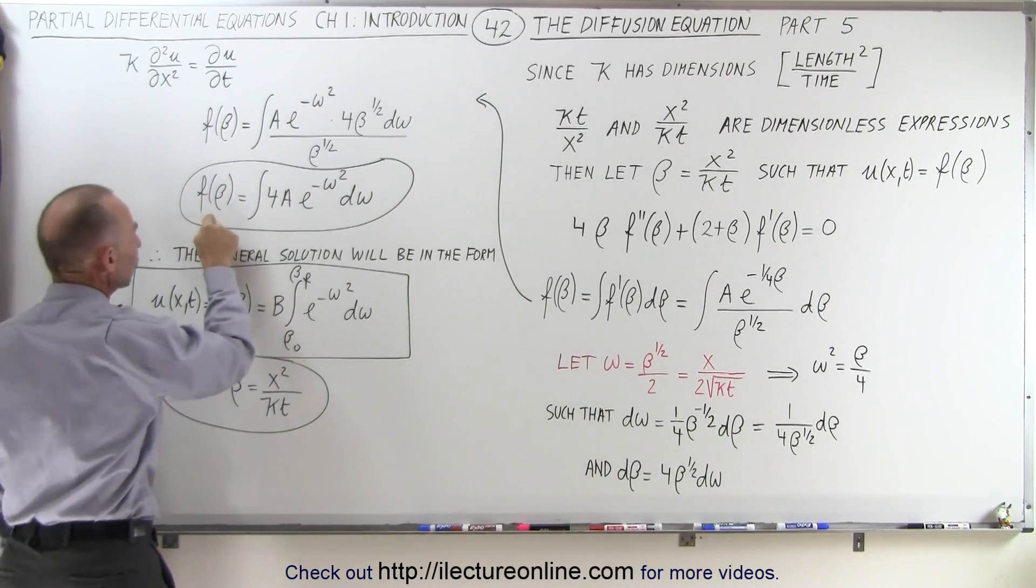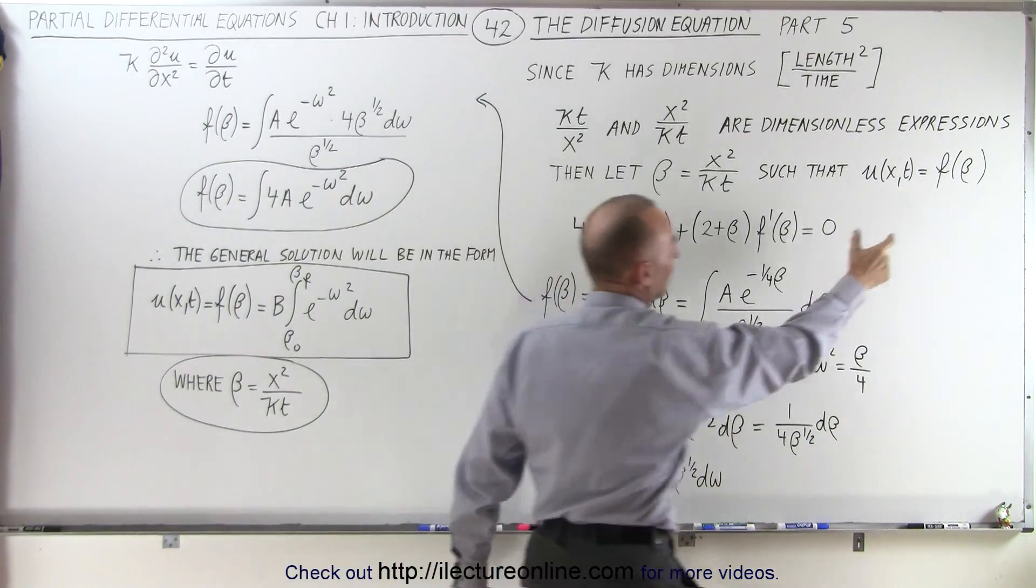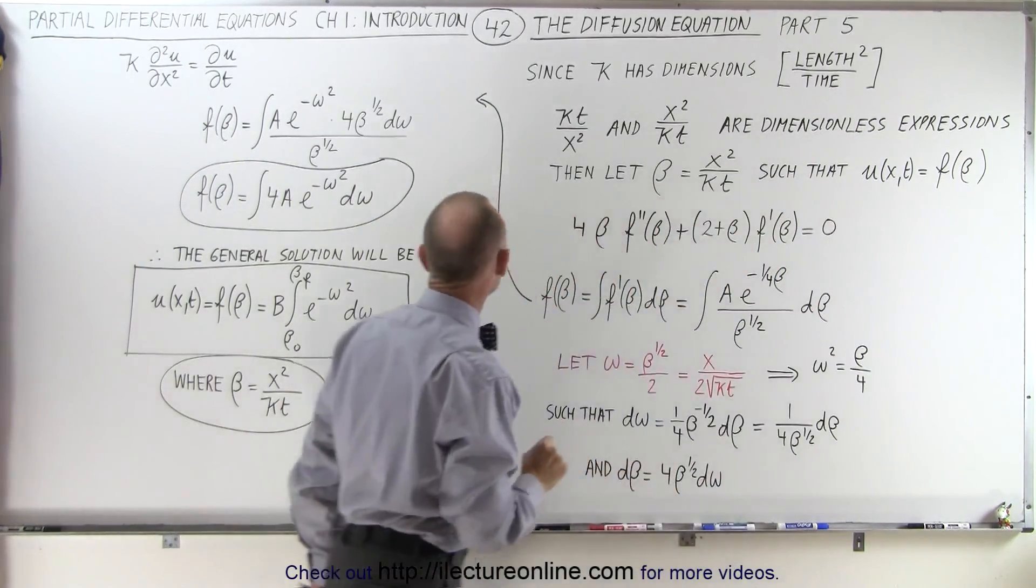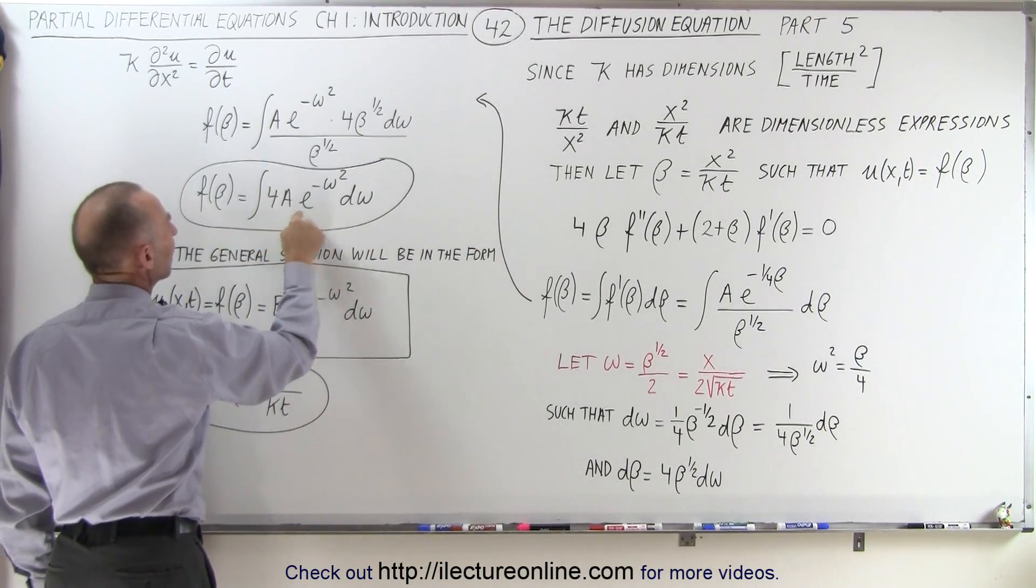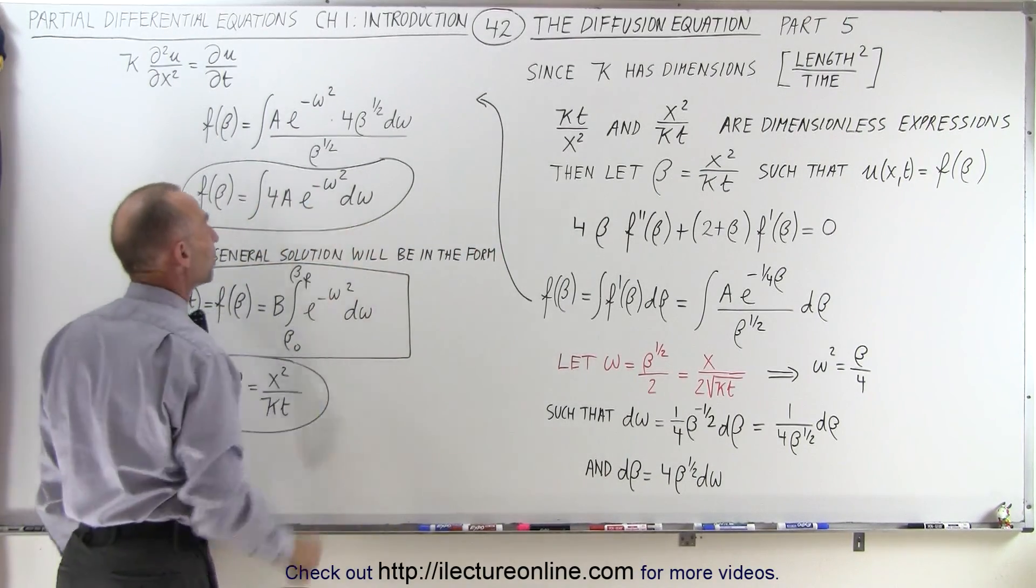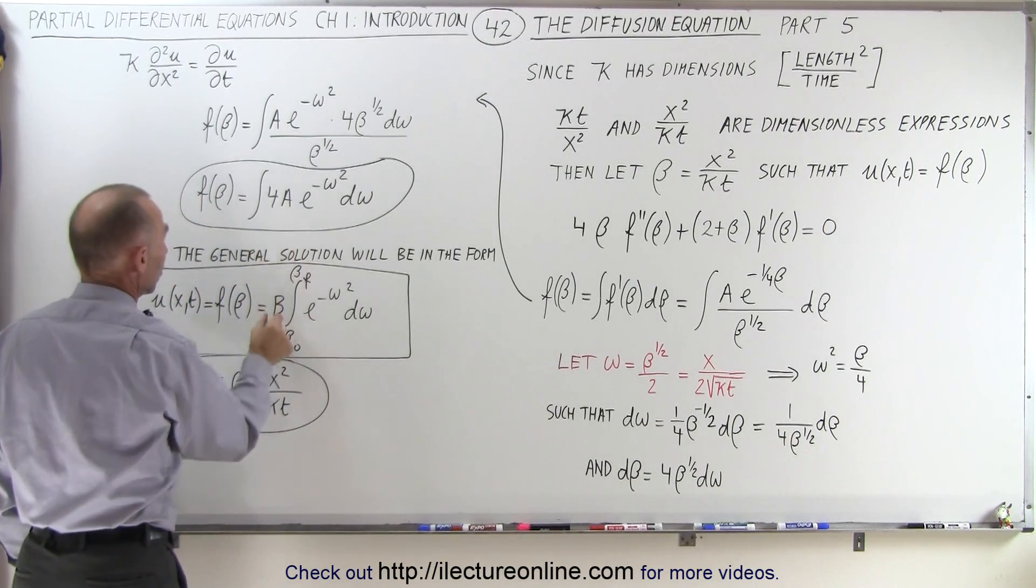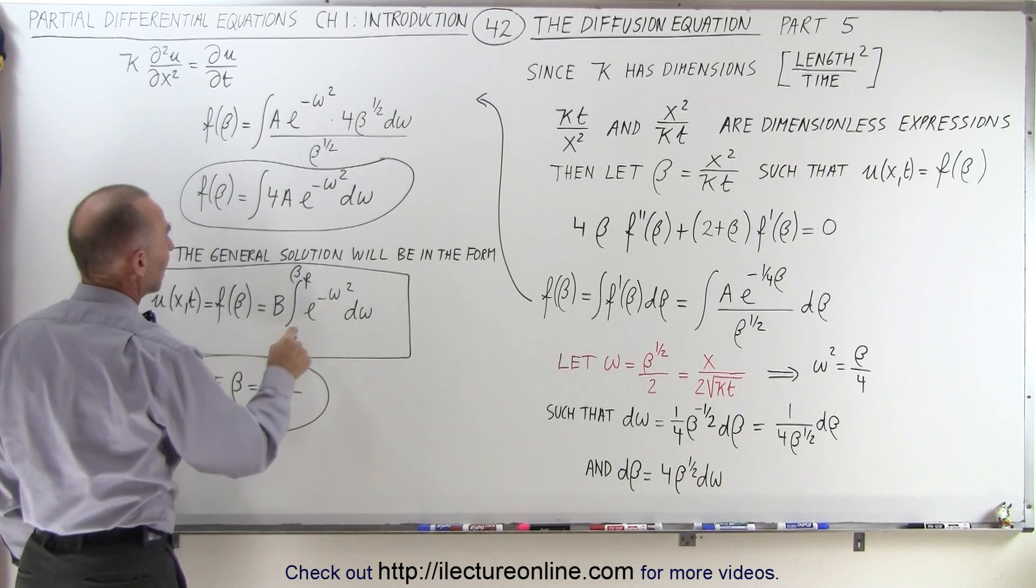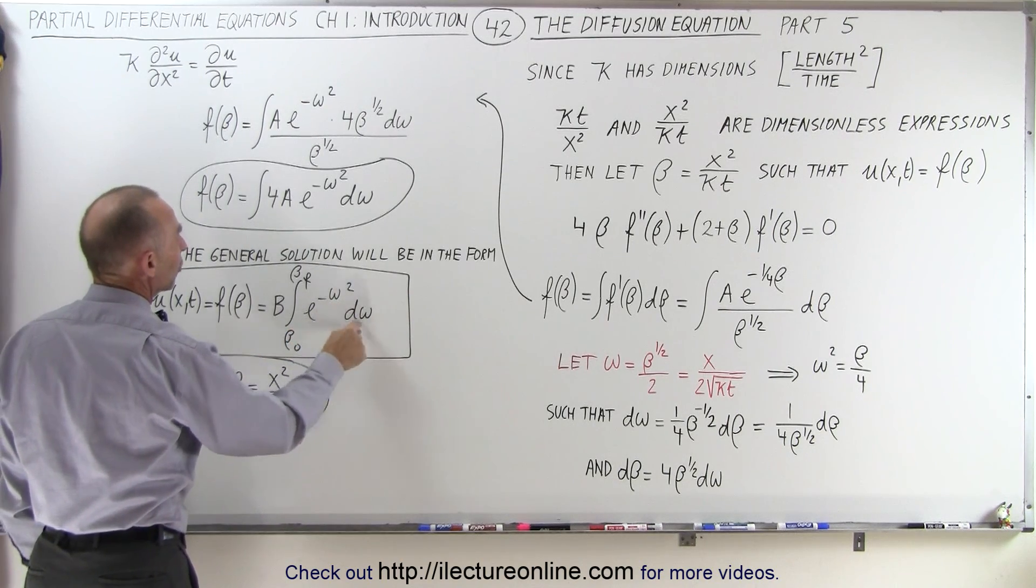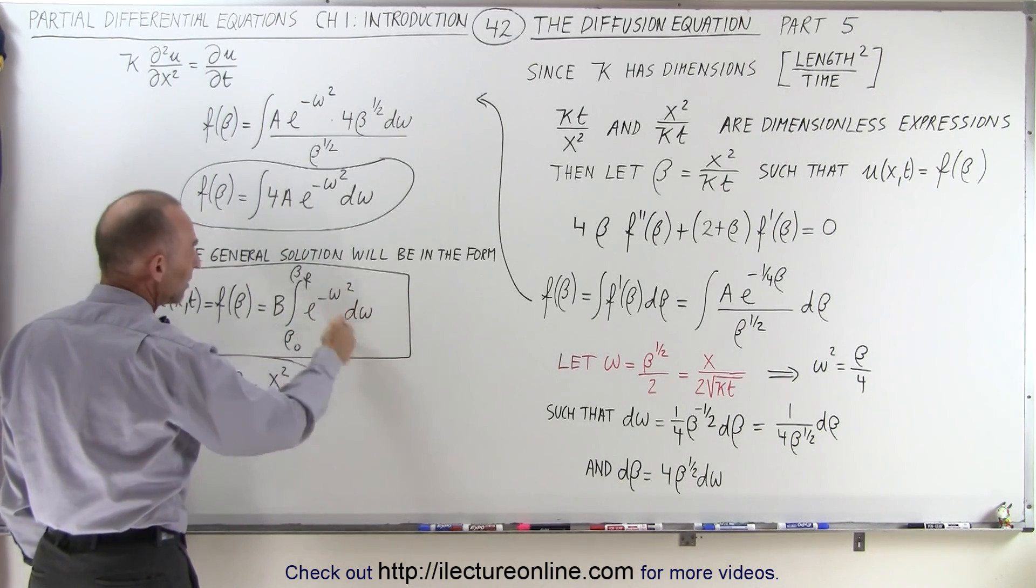So finally, we have the function we're looking for that is equal to the solution of our differential equation is equal to the integral of 4a times e to the minus omega squared d-omega. Finally, what we can do, we can take 4a, which is a constant, call it a constant b, then have the integral of e to the minus omega squared d-omega, and of course, this can be any variable.